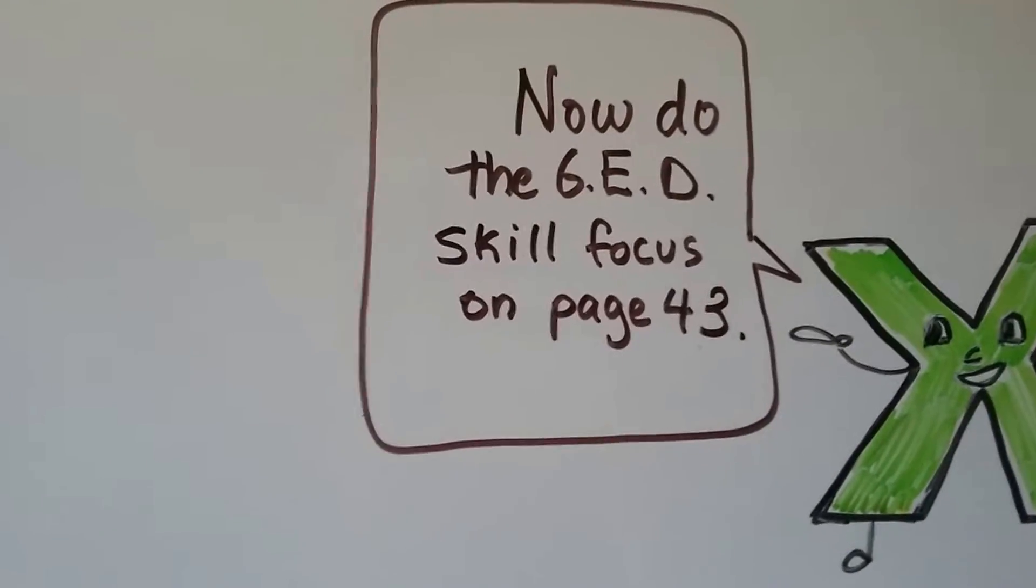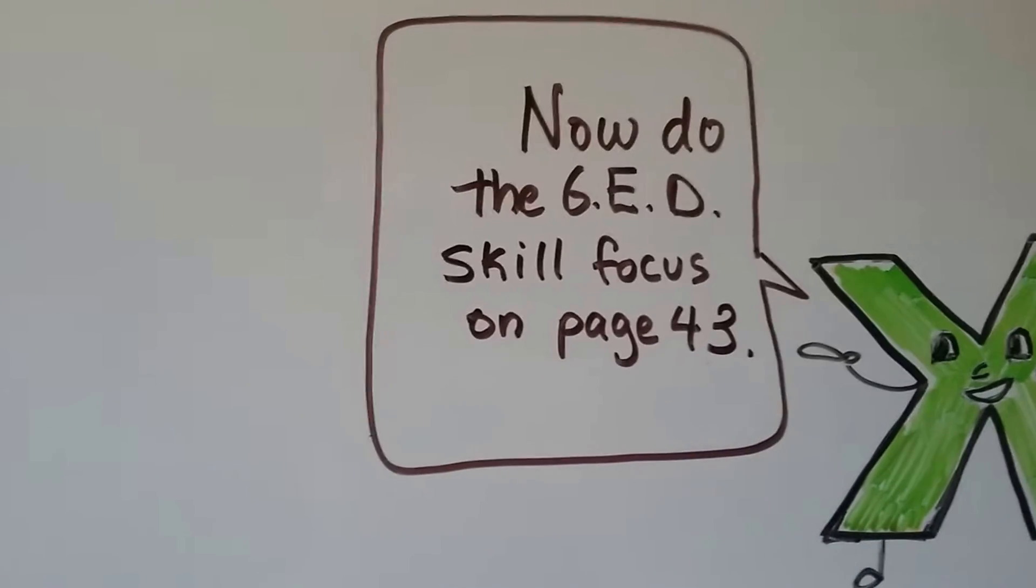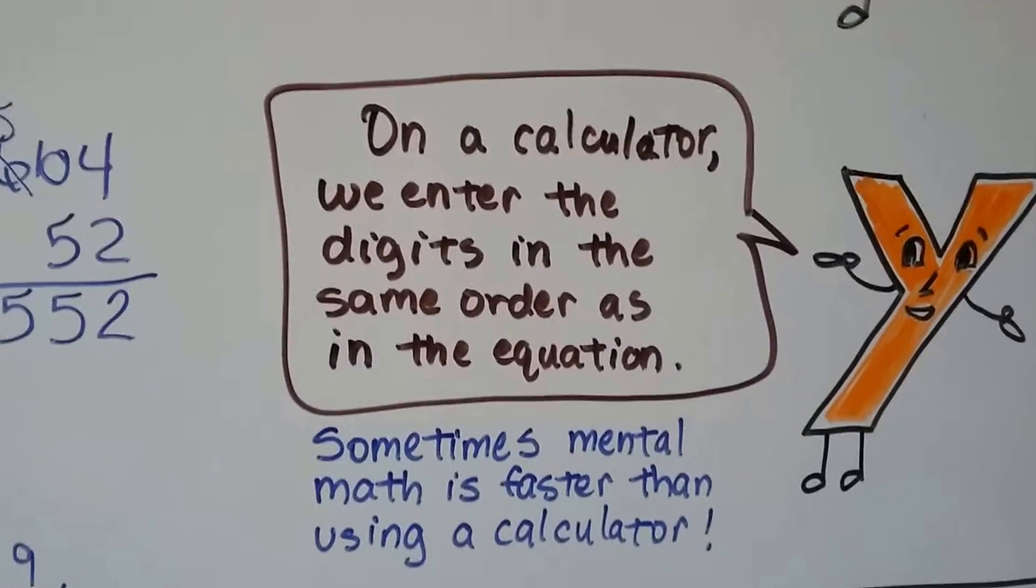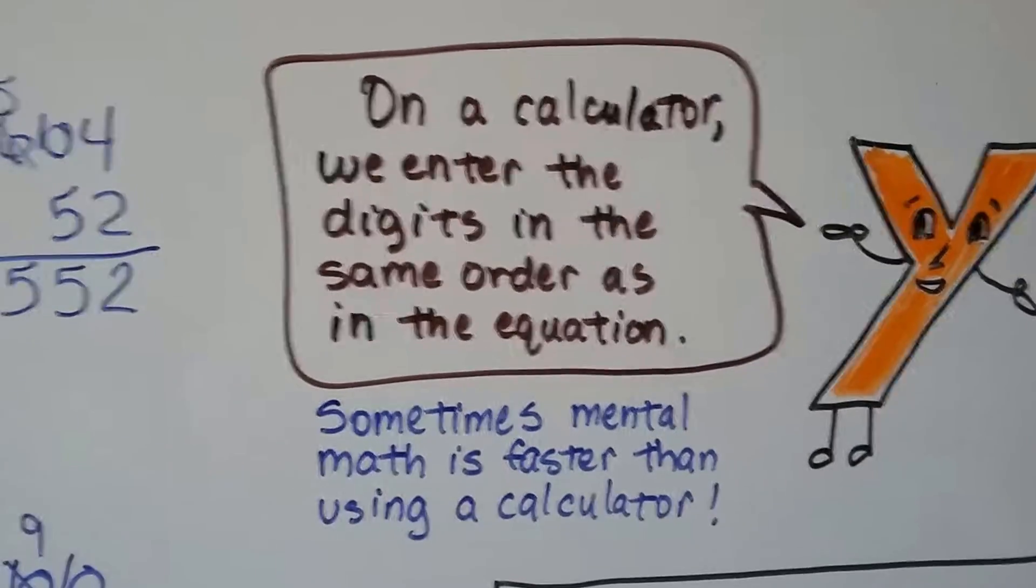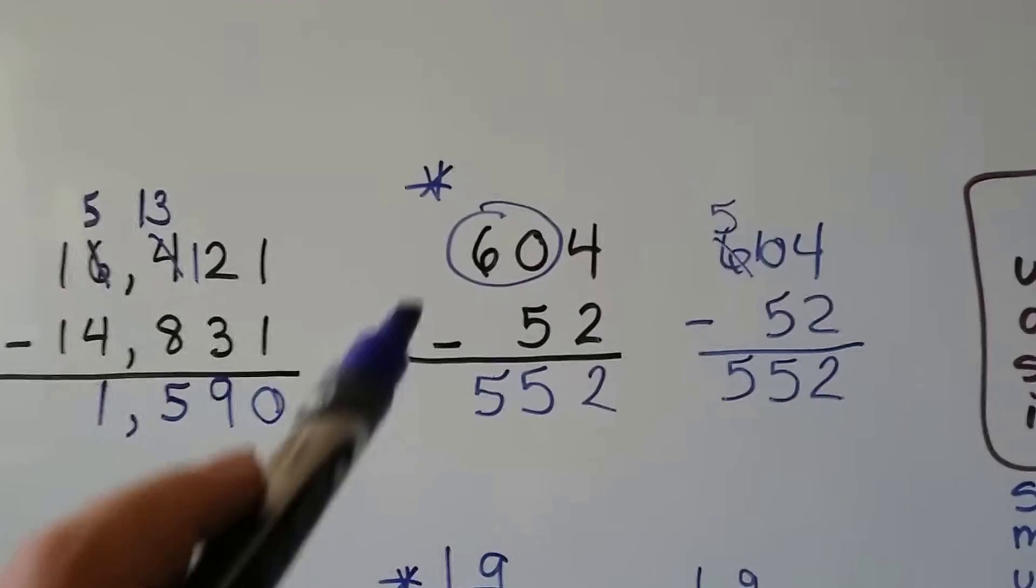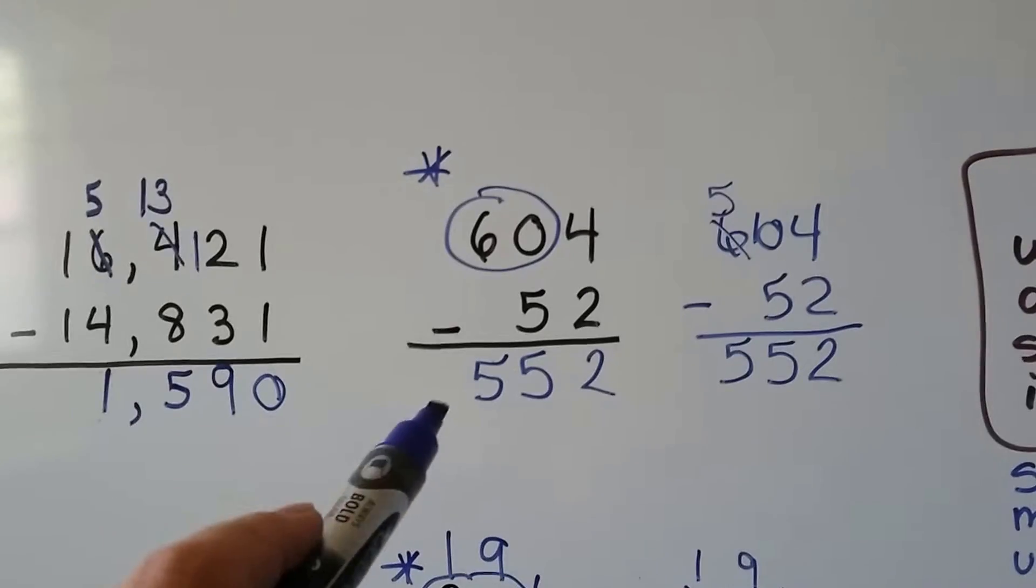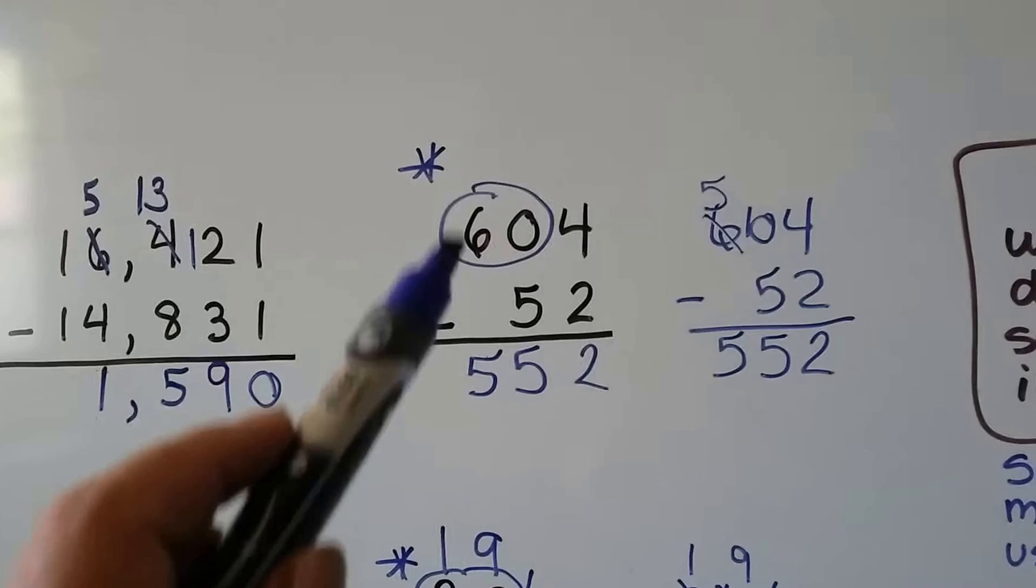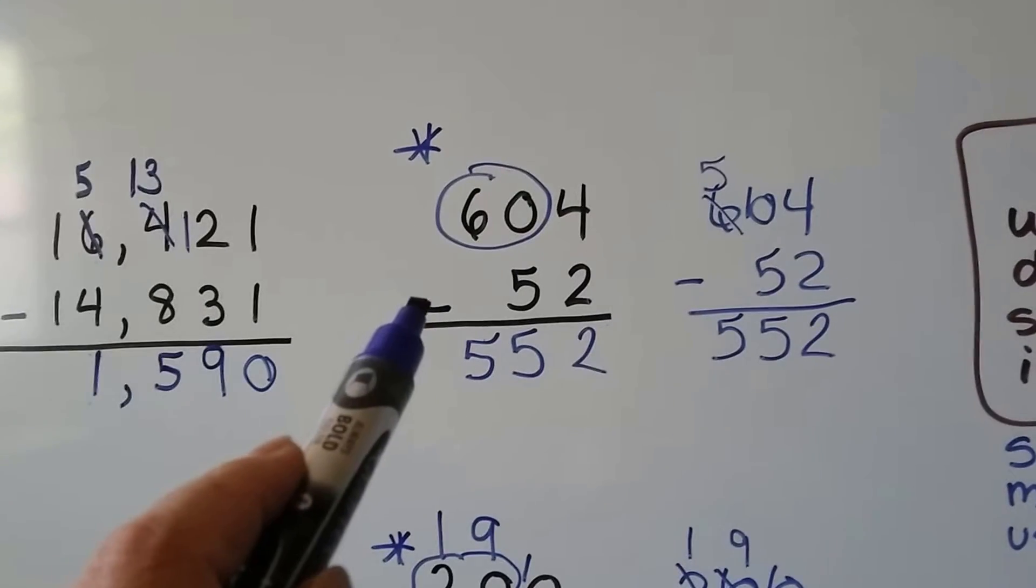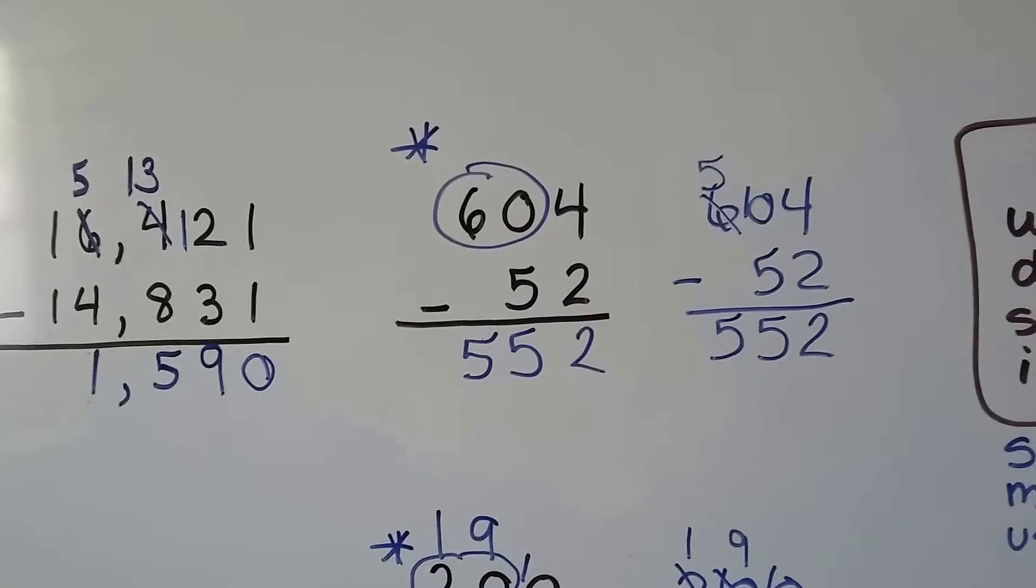You should now be ready to do the GED math focus, math skill focus on page 43. I want you to keep in mind that on a calculator, we enter the digits in the same order as in the equation. So if you're doing this, which would be quicker to do on a calculator than mentally, or this one, you enter 6, and then enter 0, then enter the 4, then hit the subtraction sign, then enter the 5, enter the 2, and the equal sign.